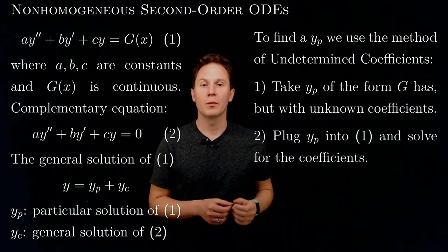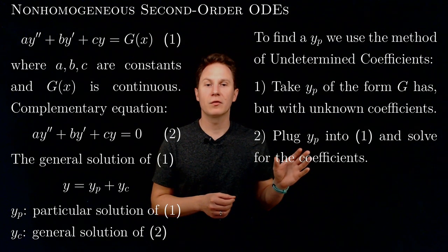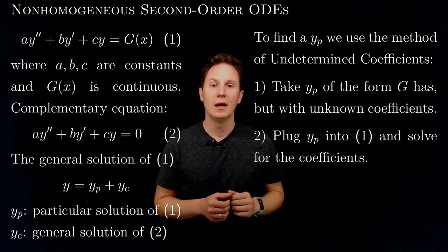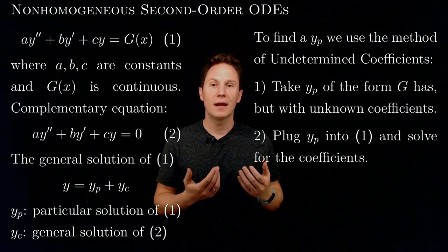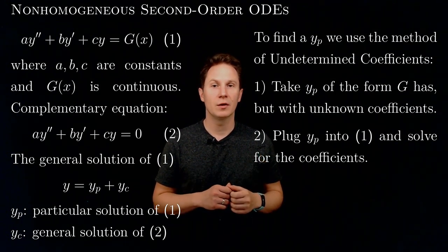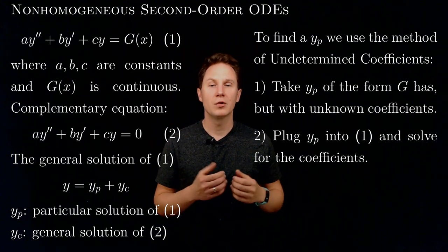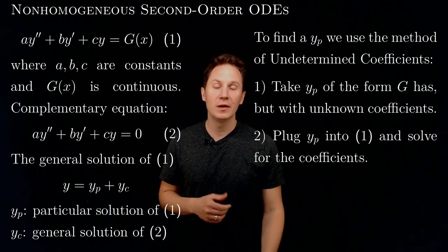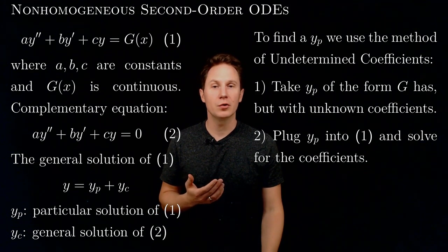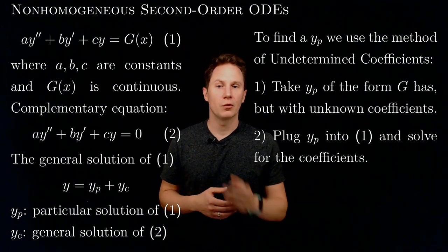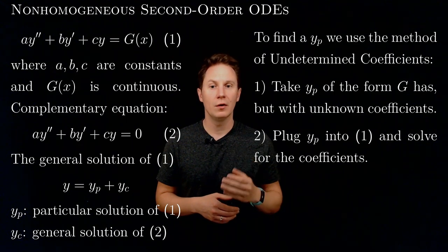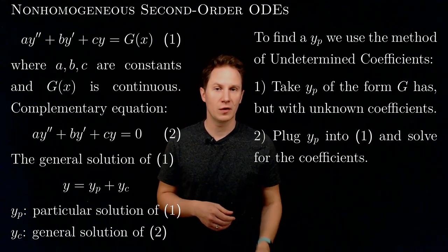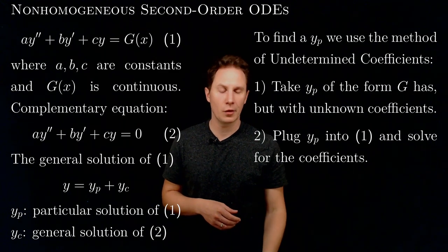In the second step, we plug this trial solution into the non-homogeneous equation and get a relation for these undetermined coefficients that we solve for them. This way we get a particular solution, and then solving the complementary equation in general, we get the general solution to the non-homogeneous equation guaranteed by this theorem.